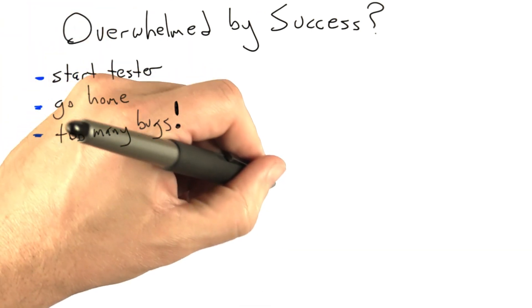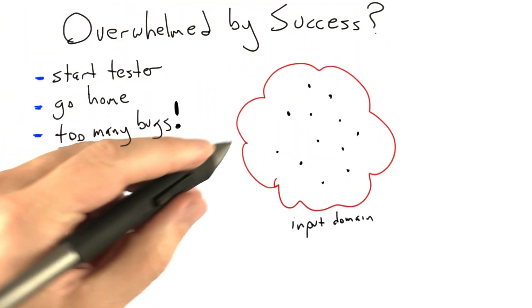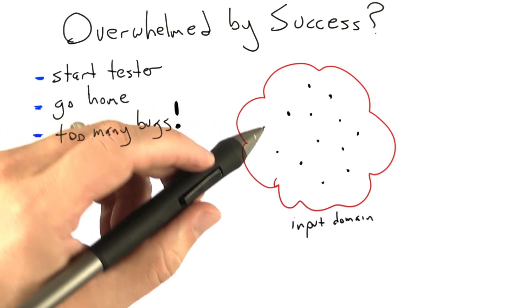The way we want to visualize the situation is like this. So we have the input domain, of course, and all I'm going to show here is inputs that found bugs. So there's a bunch of them.